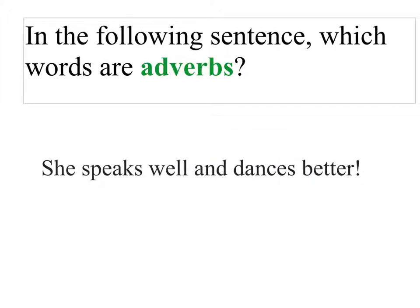Next example: 'She speaks well and dances better.' See if you can figure out what the adverbs are. Let's find the verbs. She speaks — speaks is an action, so that's a verb. How does she speak? She speaks well, so there's your adverb. Is there another verb? Yes — dances. How does she dance? She dances better. So better is also an adverb.